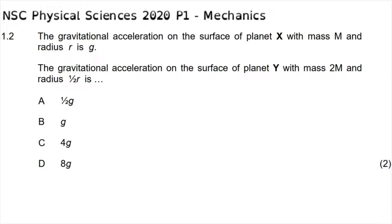The mechanics section of the 2020 Physical Science Physics paper starts with question 1.2 in multiple choice, which reads: the gravitational acceleration on the surface of planet X with mass M and radius R is g. The gravitational acceleration on the surface of planet Y with mass 2M and radius one-half R is... and then we are given four options.